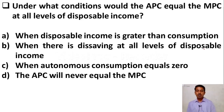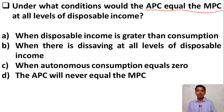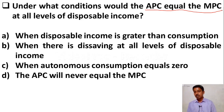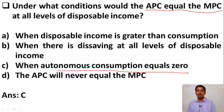The next question: under what conditions would Average Propensity to Consume equal Marginal Propensity to Consume at all levels of disposable income? APC equals MPC when autonomous consumption is equal to zero. At that condition, APC equals MPC. Let us move to the next question.